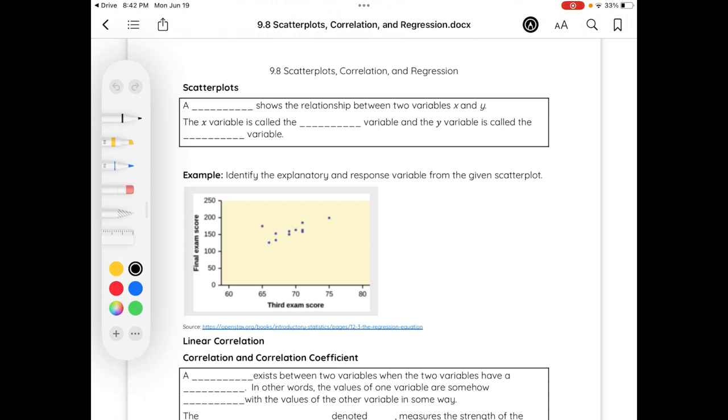A scatter plot is a graphical representation of data points plotted on the Cartesian plane or the XY plane. It displays the relationship between two continuous variables. The horizontal axis represents one variable while the vertical axis represents the other. Each data point is plotted as a dot and the pattern formed by these dots provides insight into the relationship, if any, between these variables.